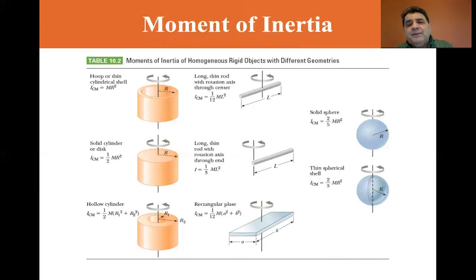And now here are some examples of moments of inertia. If you have a thin hoop or a thin cylindrical shell, its moment of inertia around its center of mass is equal to MR squared.